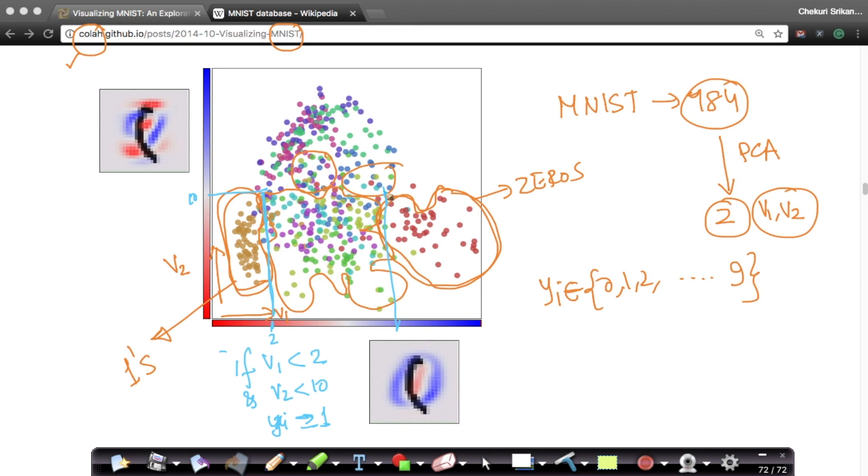I can put a bounding box like this and I can say, if V1 is greater than, let's assume this was 10 and this was also 10. If V1 is greater than 10 and V2 is less than 10, which means this region, then yi equals to 1. For zeros and for ones, this type of PCA visualization is helping us understand that I should be able to write simple if-else rules to separate my zeros and ones.